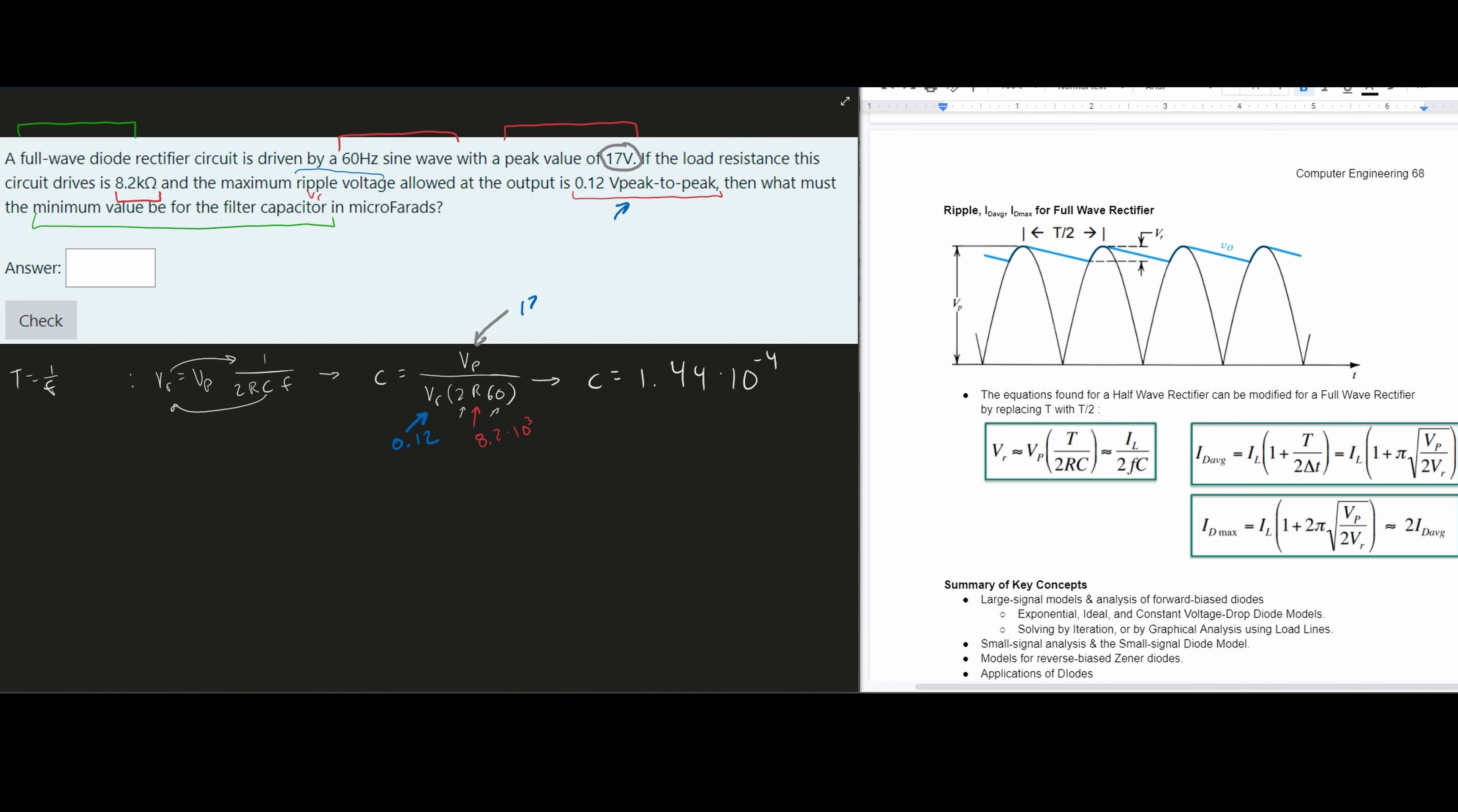We're not done yet, because we note this is in microfarads, so it wants the answer in microfarads. Since this capacitance is in farads, the unit for capacitance, we need to multiply by 1 micro, which is over 10⁻⁶. We can take what we have here and divide it by 10⁻⁶, which gives us approximately 143.97 microfarads. We've made the conversion after we solved our problem, and that is the answer for this problem and how we would go about looking at full-wave rectifiers.